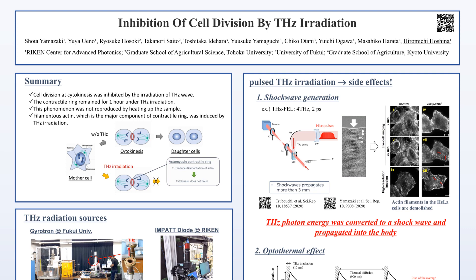And as a result, division of the cell was inhibited by the terahertz irradiation, because the actomyosin contractile ring, which must be disassembled at the end of cytokinesis, remains with the help of terahertz waves.